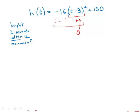The number that makes t minus 3 equal to zero is t equals 3. At t equals 3, we get a height of 150, and that is the maximum height. We want 2 seconds after that maximum, so that would be at t equals 5.